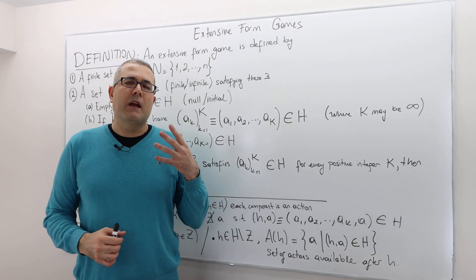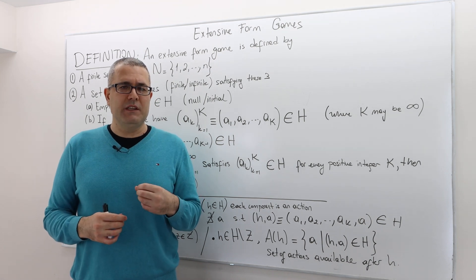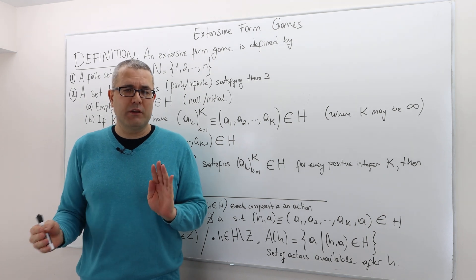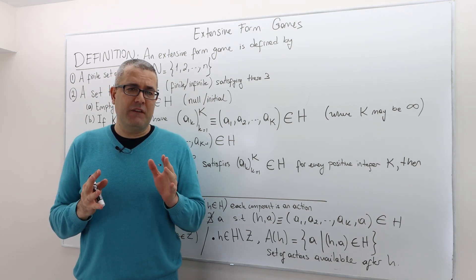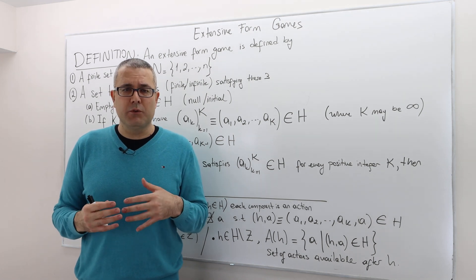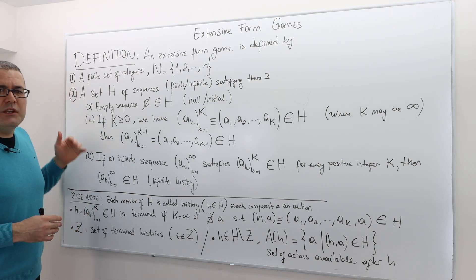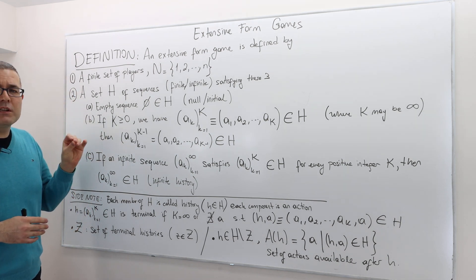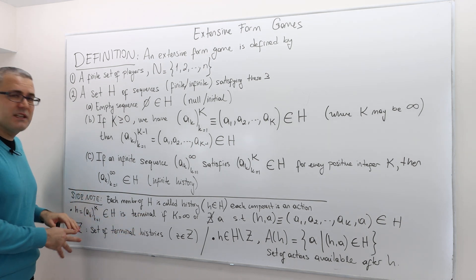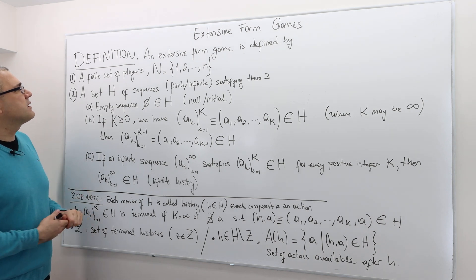Now we're going to start describing extensive form games in detail. I would like to warn you before we start: it's going to be a very long definition, and within this definition there will be a bunch of notations we will need to use. I'm going to number each important part of an extensive form game and then provide some notations or explanations as a side note. So let's start. An extensive form game must have the following ingredients.